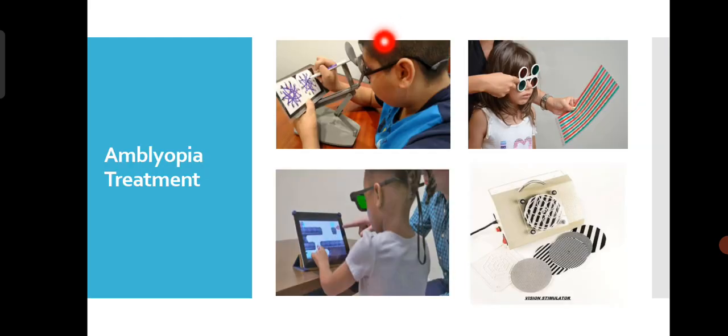In vision therapy, the child draws with the help of a cheiroscope, which has a septum and makes use of both eyes. If the child is not using the Amblyopic eye, he will not be able to trace or draw the image. Another tool is the red-green bar reader, used over a book with red-green goggles, requiring the child to utilize both eyes to read.